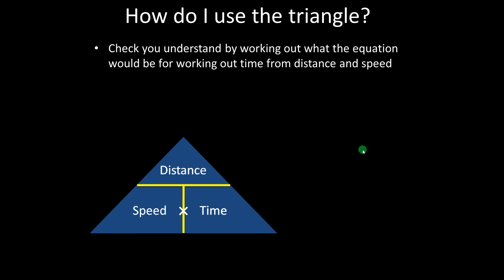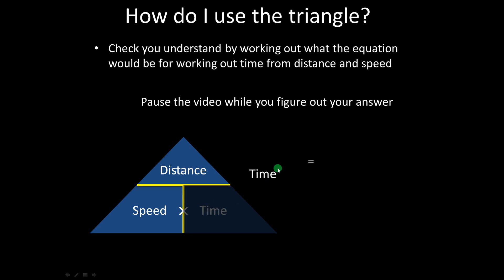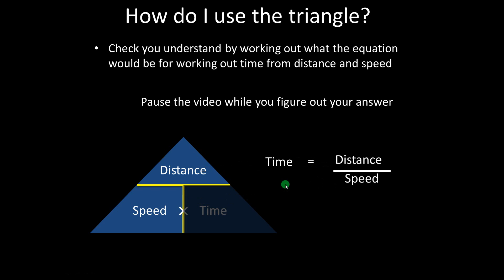To check that you've understood that, try and work out what the equation for time is using the triangle. Pause the video while you do that. Hopefully you've covered up time, and that left you with distance on the top and speed on the bottom. This little line forms the division, so time equals distance divided by speed.